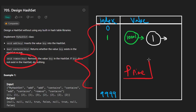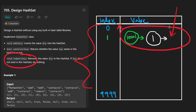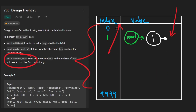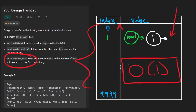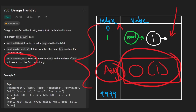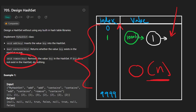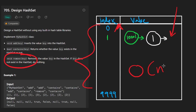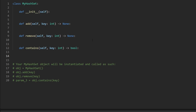For time complexity: in theory, if the array length is a prime number it helps minimize collisions, and if we implement rehashing correctly we can be close to constant time in the average case. Most interviewers assume constant time for hash set operations. For memory complexity, it's O(n) where n is the number of keys, though technically we're pre-allocating the entire array, which adds some overhead.